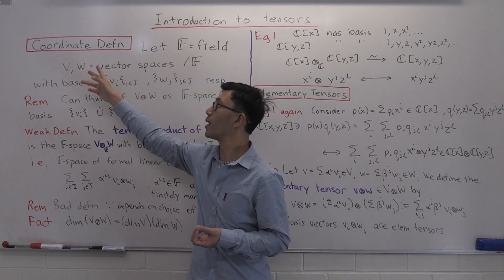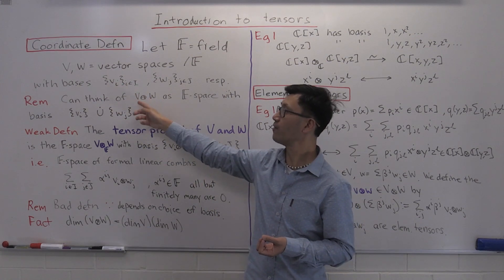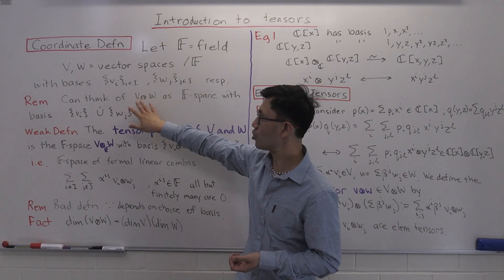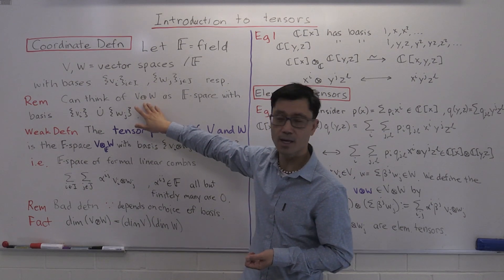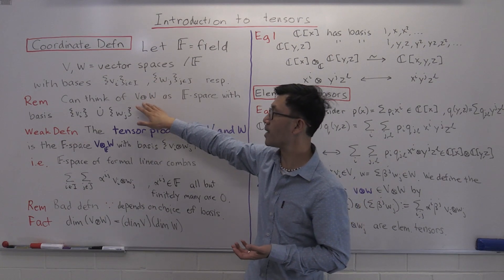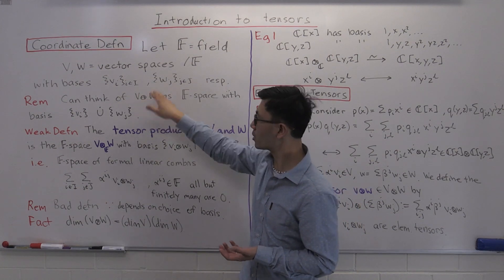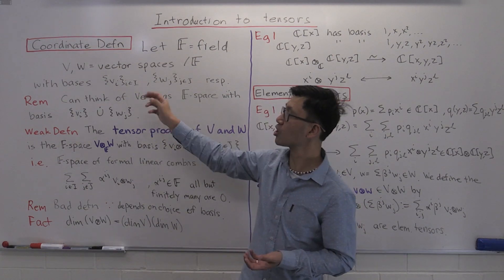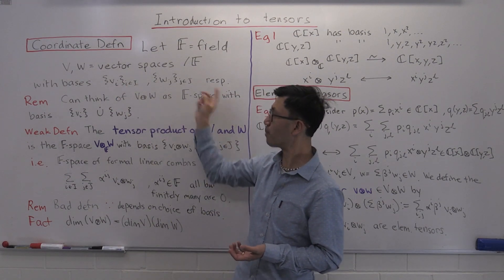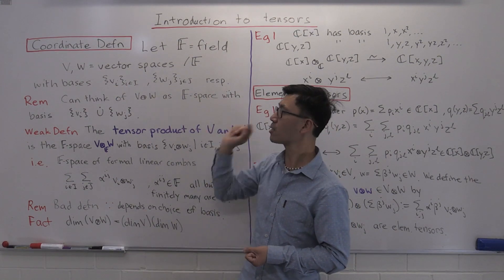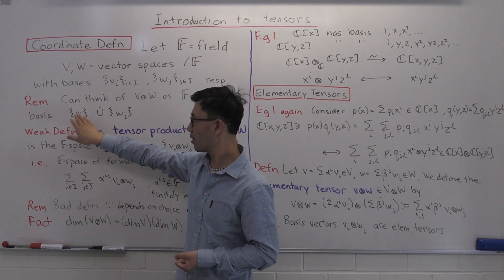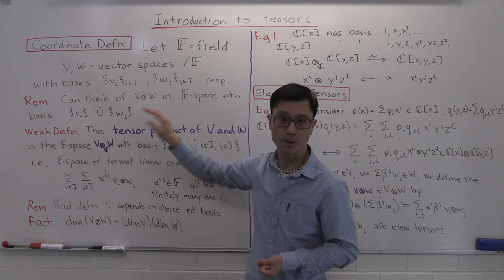One way to do it is to look at the direct sum V ⊕ W. There's a very simple definition using pairs, but if you want to think of it in terms of coordinates and bases, the basis for this is just the disjoint union of the bases for V and W — it's the F-space which has basis equal to the disjoint union of the set of v_i's with the set of w_j's.